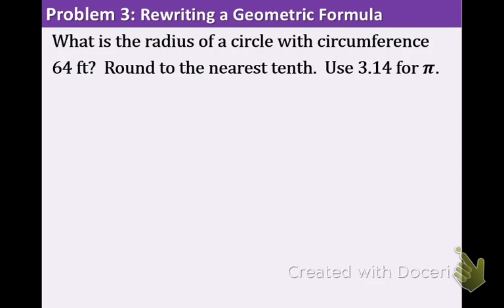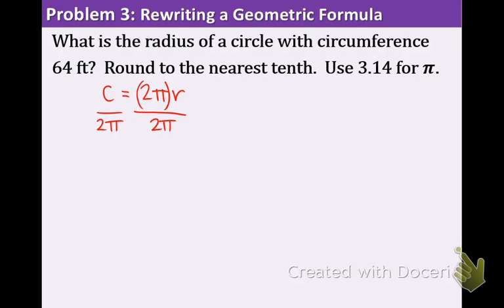In example 3, we need to find the radius of a circle that has a circumference of 64 feet. Remember, circumference is the perimeter or the outside distance of the circle. Round to the nearest tenth and use 3.14 for pi. The circumference formula from our table is C equals 2 pi r. We know the circumference but not the radius, so we need to get r by itself. The 2 pi is multiplying r, so we divide both sides by 2 pi, giving us r equals C over 2 pi.